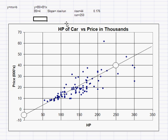So we would write this equation as y = -4 + 0.176x. Filling in what y and x represent: price in thousands = -4 + 0.176 × horsepower. Now, what can we do with this?